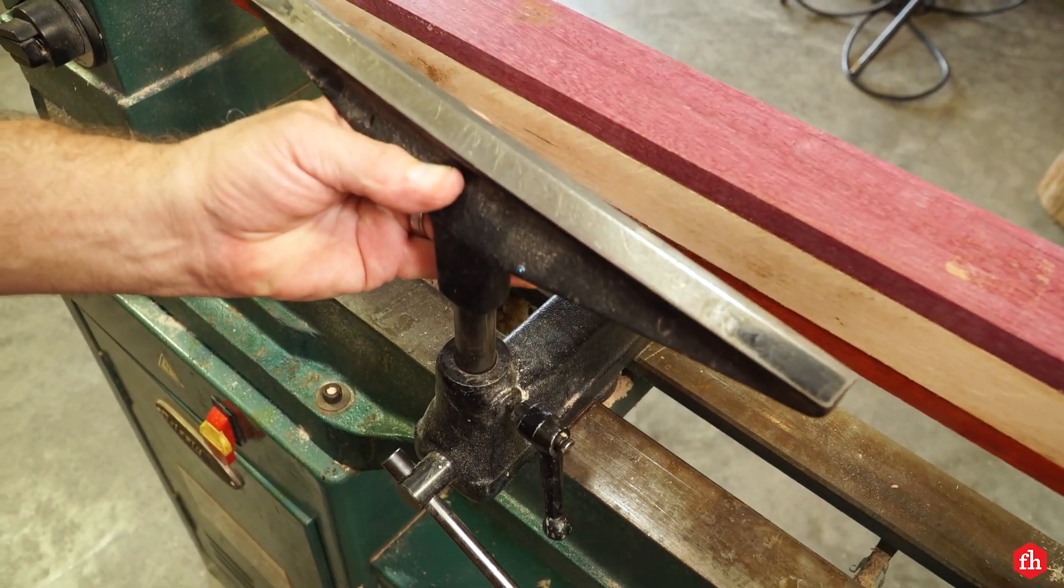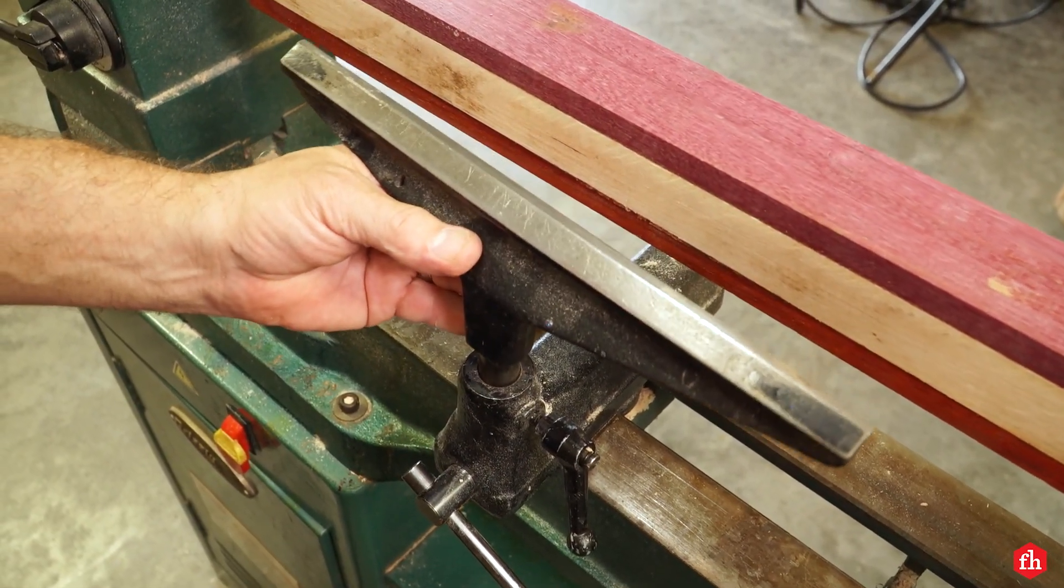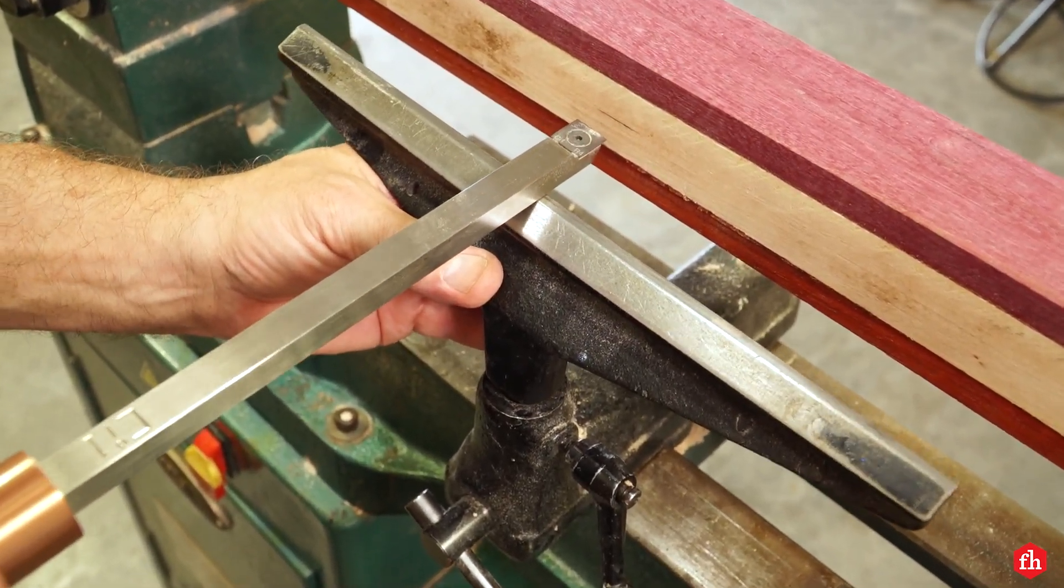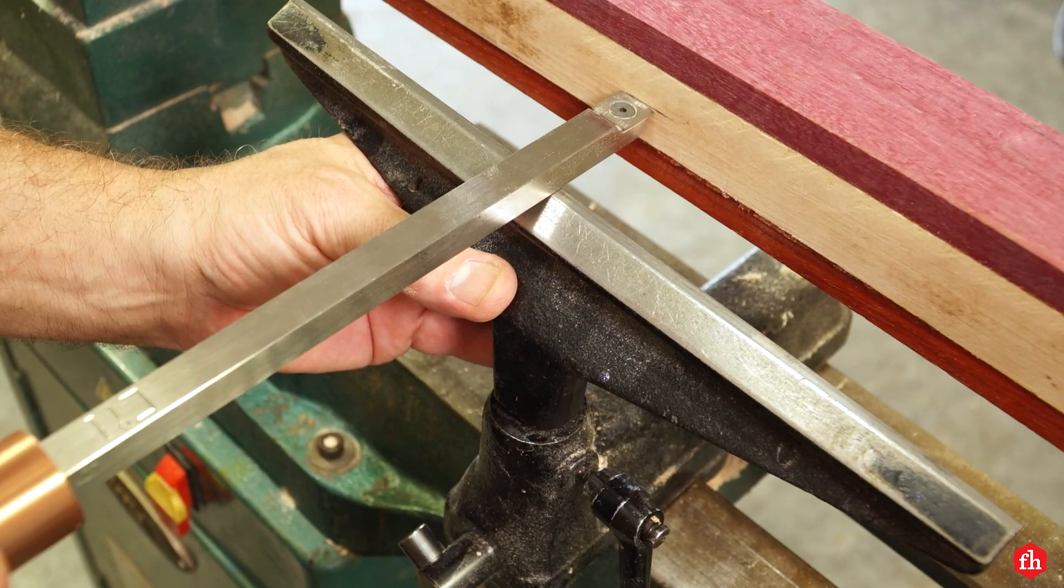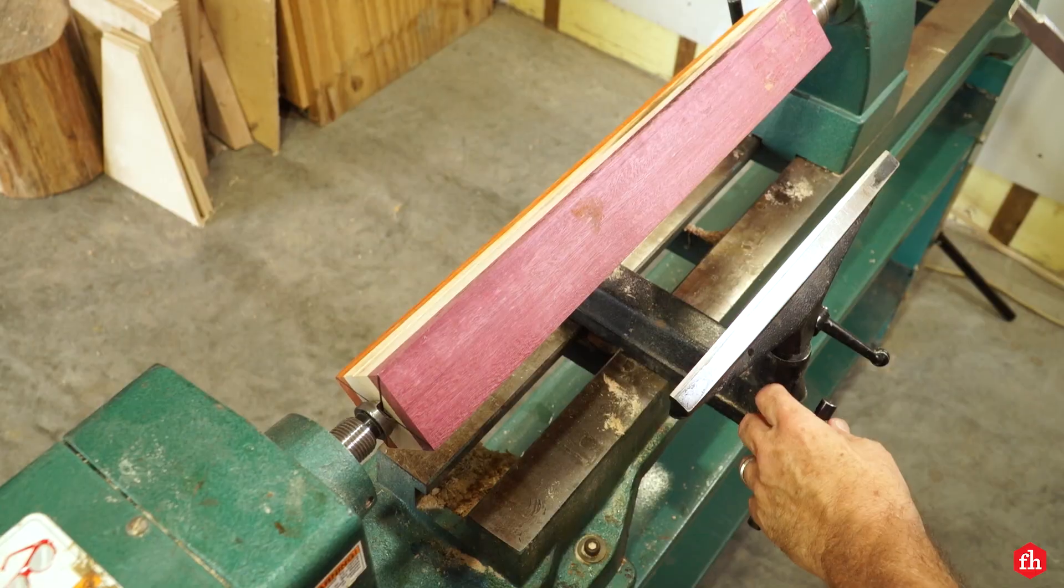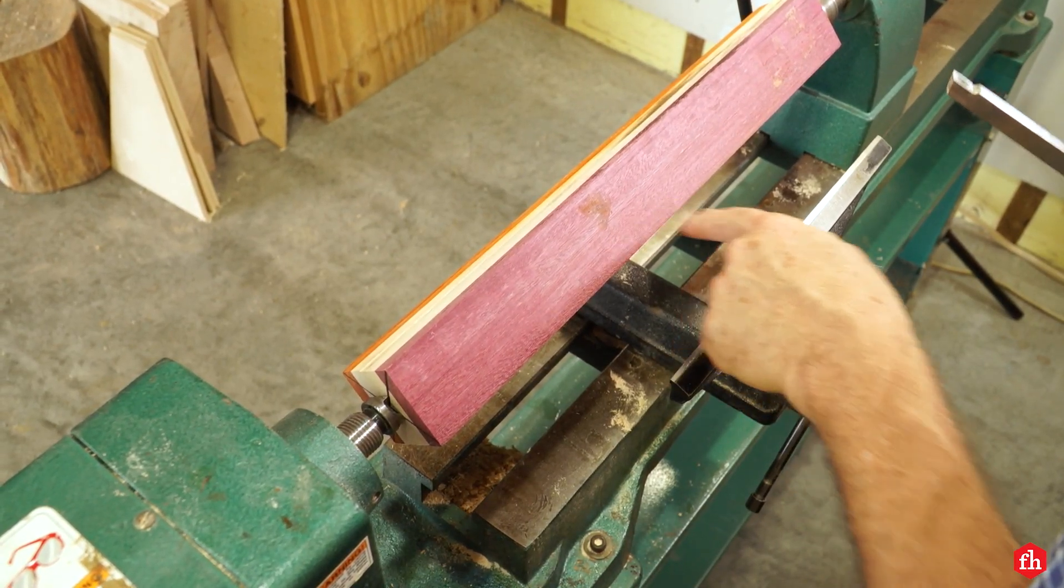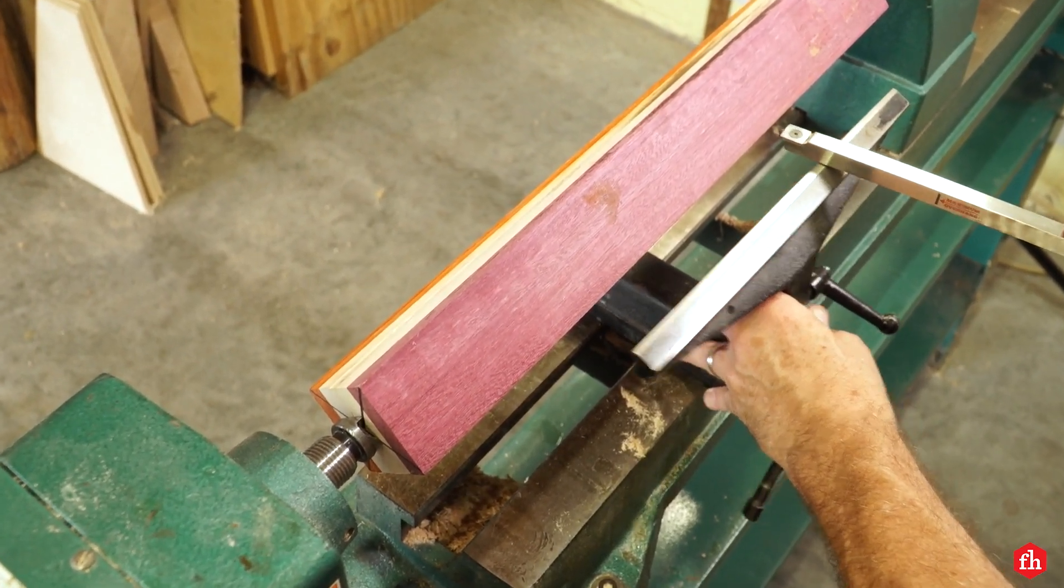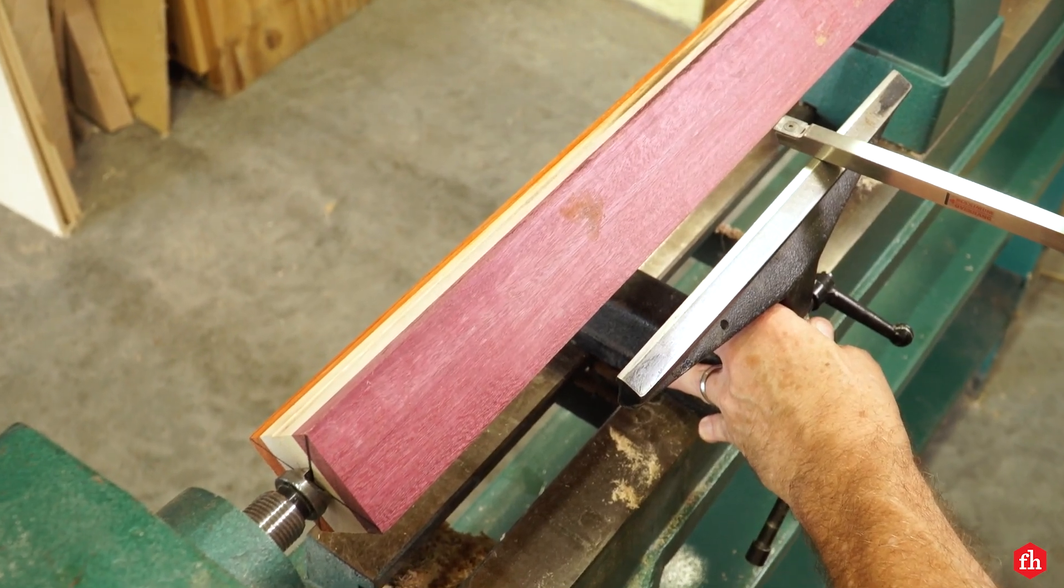Setting the height of your tool rest is different for each tool. For these carbide cutting tip tools that we're using, you want to have your cutting tip directly in the center of your turning stock. The distance between your turning blank and your tool rest will change as you turn, but to start out, I like to put it about an inch away.